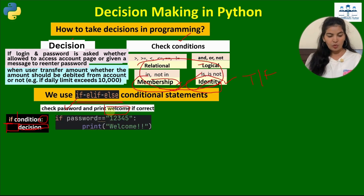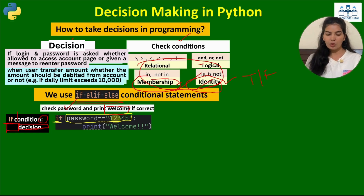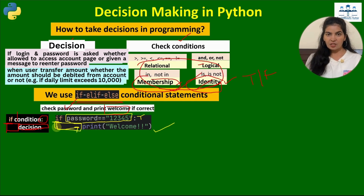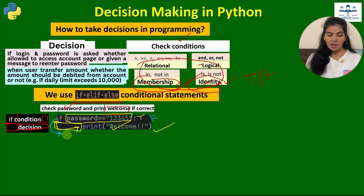Say we have to check the password; if the password is correct we print a welcome message. We use the if keyword with the condition using the equal-to relational operator. If the password equals 12345 this condition is true, and the Python interpreter moves inside and executes the statement. This space is called indentation — it tells the interpreter this statement is inside the if block. If the condition is false, the interpreter exits the if statement and moves past it.